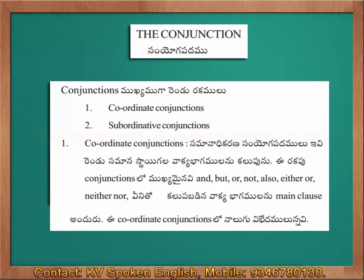Ikkada conjunctions are mainly of two kinds: 1. Coordinated Conjunctions, 2. Subordinated Conjunctions. Coordinated Conjunctions — samanadhi karana samyoga padhalu — join clauses of equal rank. The main conjunctions in this type are: and, but, or, not, also, either/or, neither/nor.